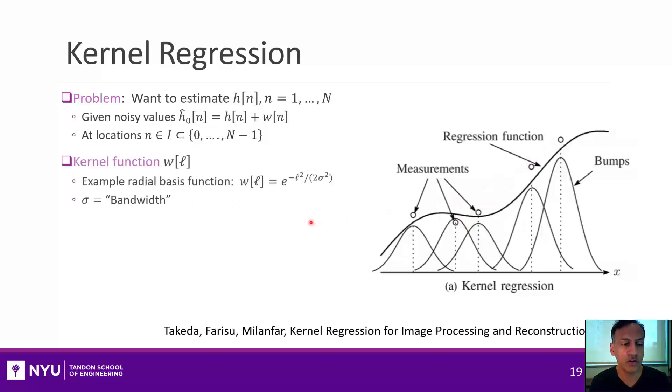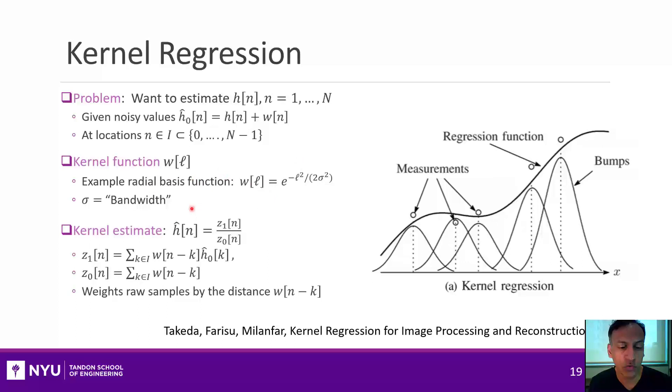All right, so what you do is, for kernel regression, you have something called the kernel function. And the kernel function is usually some function which is a two-sided discrete function that will have some kind of weighting. And I'm going to talk about that weight momentarily. And the most common is what's called this radial basis function. And what you do with this weight is the following. So your channel estimate h hat of n, and this is at any n, not just the n on which you have the measurements, will be the division of two things. The first thing will just be a weighted combination of the raw estimates, and then this other on the denominator is just this scaling term here.